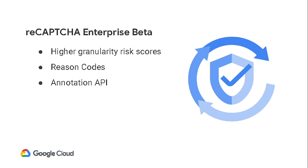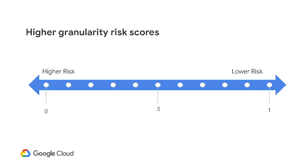We added higher granularity risk scores. Rather than four scores, you get ten reason codes. We'll tell you why we thought something on your site was high risk or worth looking at. And then an annotation API, which is the means by which you can help us tune our model and protection to your particular site and use case so we can get higher accuracy and granularity on our defenses for your own business.